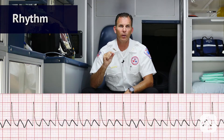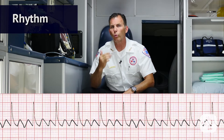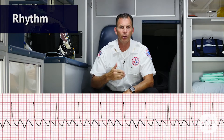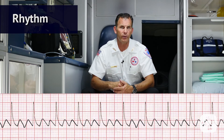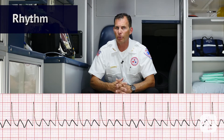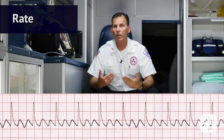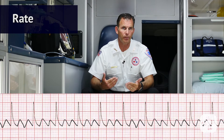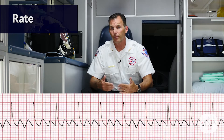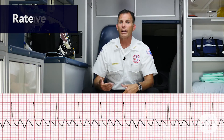Now let's take a closer look at the ECG. First, we ask ourselves about the rhythm. Is the rhythm regular or irregular? In this case, it's variable, depending on the ratio of F waves to the QRS complex. Then we ask ourselves, what is the rate? The rate is variable — is it normal, fast, or slow? In this case, the rate is variable because of its irregularity.